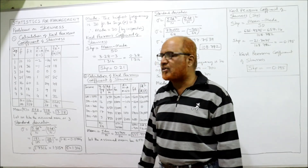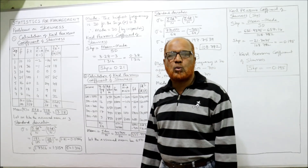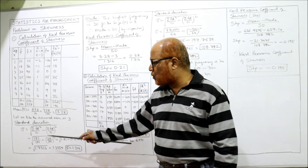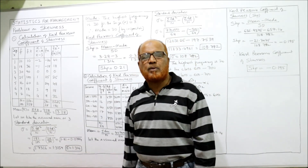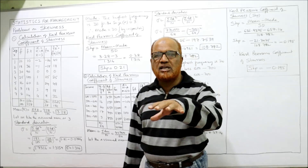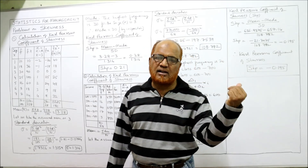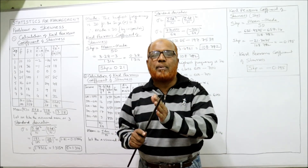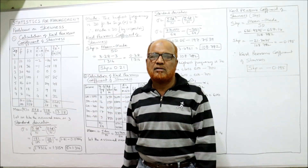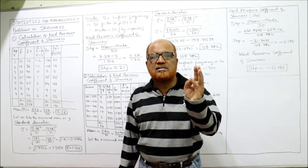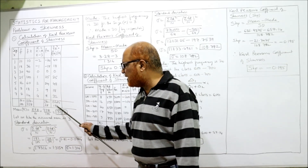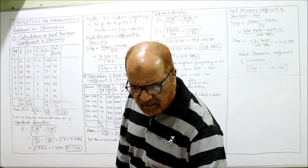Now apply the standard deviation formula when deviations are taken from the assumed mean: σ = √(Σfd²/n − (Σfd/n)²). Skewness is based on measures of central tendency and dispersion, so you must be perfect on calculating mean and standard deviation before studying skewness.